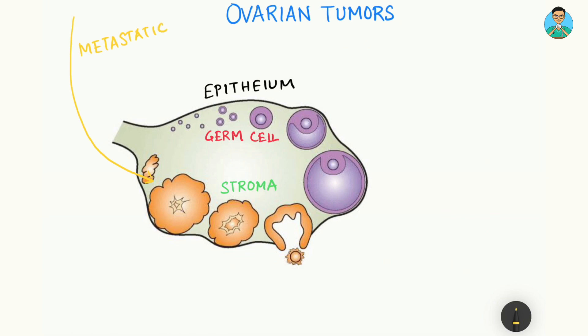Now let us one by one understand the classification of these. Under metastatic tumors, we have only one kind known as the Krukenberg tumor, and it comes from breast, stomach, etc. Now we come to the primary ovarian tumors: epithelial ovarian tumors, germ cell tumors, and stromal tumors.